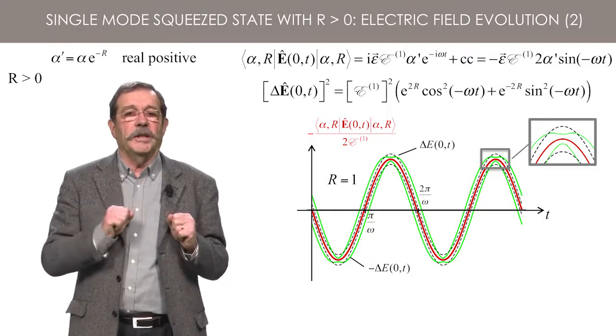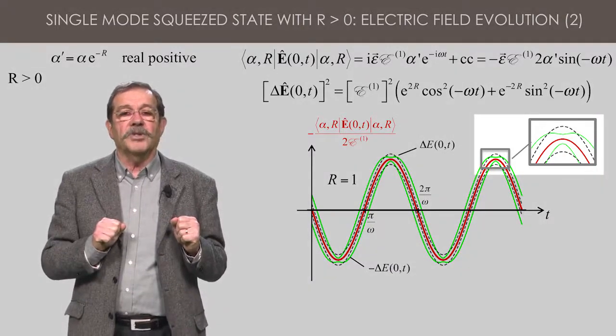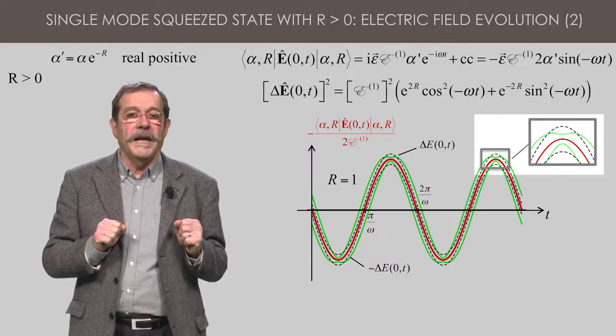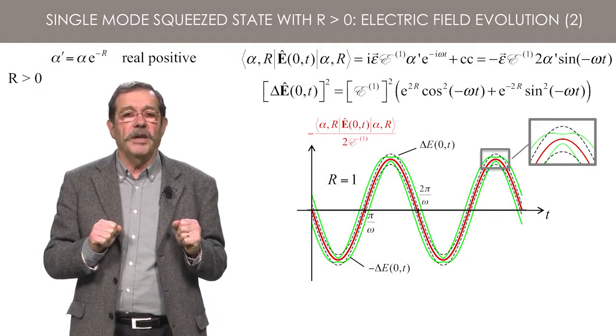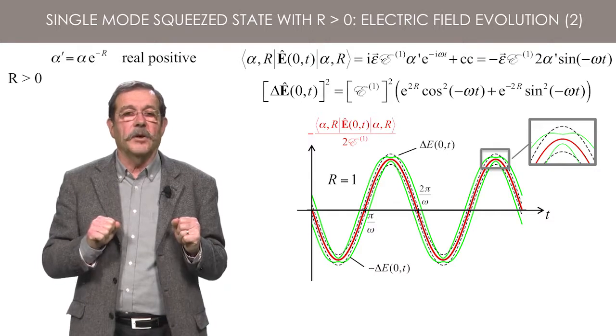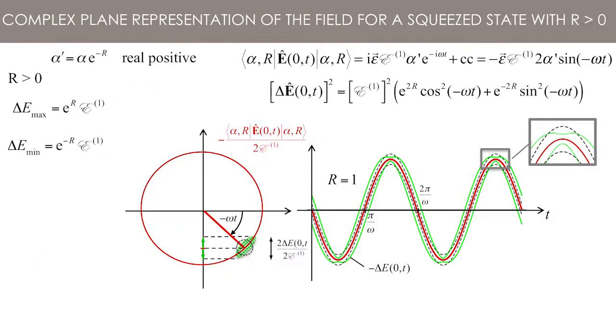A magnification around omega t equals pi over 2 modulo pi clearly shows the reduction of the fluctuation below the value for that quasi-classical state. Here again, the evolution can be described using a rotating ellipse in the complex plane.